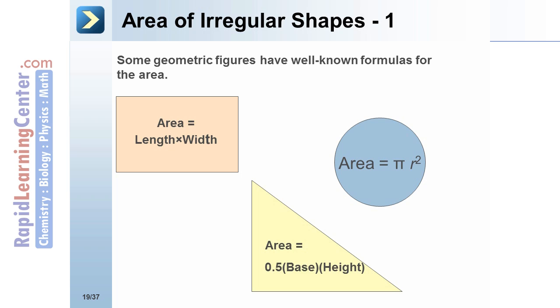Some geometric figures have well-known formulas for their areas. For example, a rectangle's area would be the length times the width. A triangle's area would be one-half times the base times the height, and a circle's area would be pi times r squared, where r is the radius.